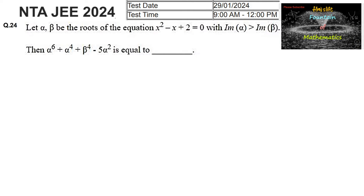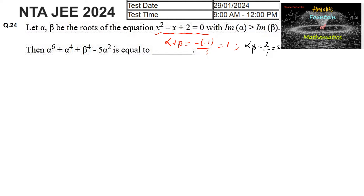Let alpha, beta be the roots of the equation x² - x + 2 = 0, with the imaginary part of alpha greater than the imaginary part of beta. We need to find alpha⁶ + alpha⁴ + beta⁴ - 5alpha². Since alpha and beta are the roots, the sum of the roots alpha + beta equals -b/a, that is -(-1)/1 = 1, and the product of the roots equals c/a = 2/1 = 2.